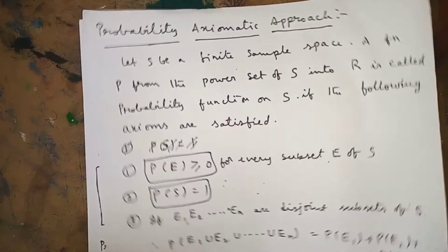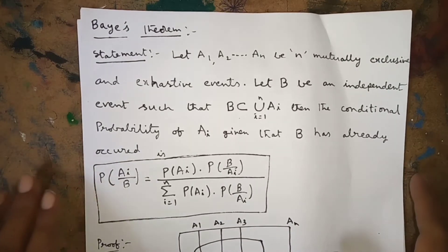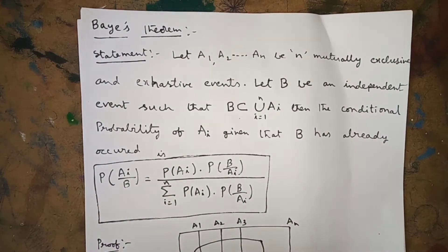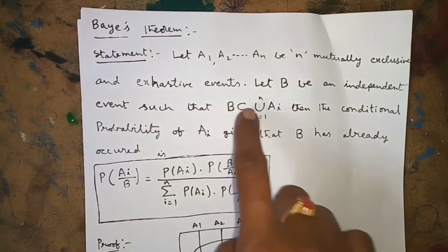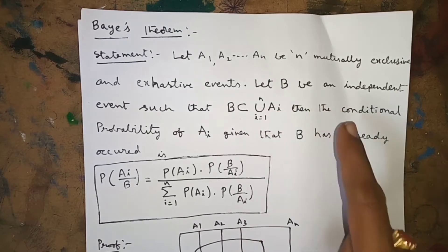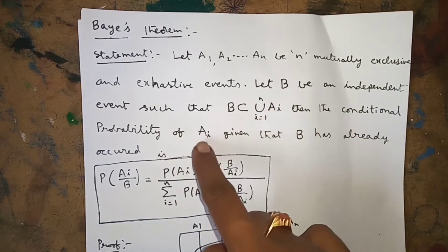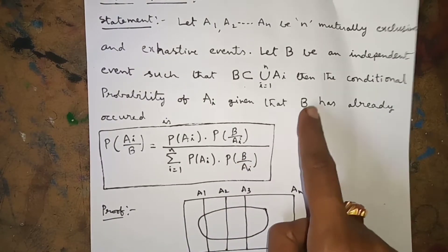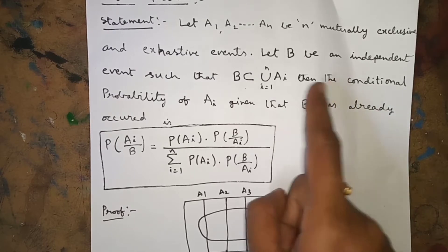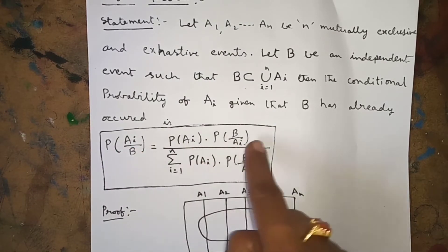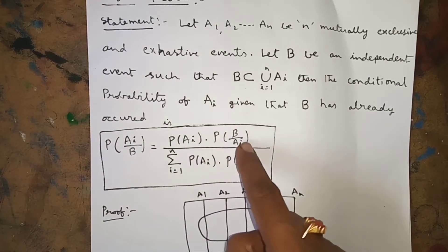The statement of Bayes' Theorem: Let A₁, A₂, ..., Aₙ be mutually exclusive and exhaustive events, and let B be an independent event such that B ⊆ ∪ᵢ₌₁ⁿ Aᵢ. Then the conditional probability of Aᵢ given that B has already occurred — denoted P(Aᵢ|B) — equals P(Aᵢ) · P(B|Aᵢ) divided by Σᵢ₌₁ⁿ P(Aᵢ) · P(B|Aᵢ).